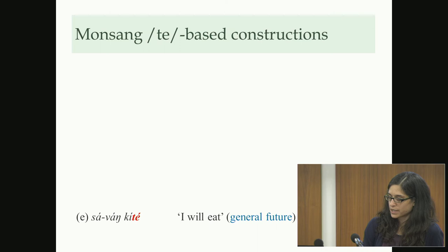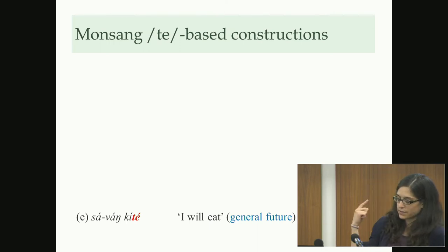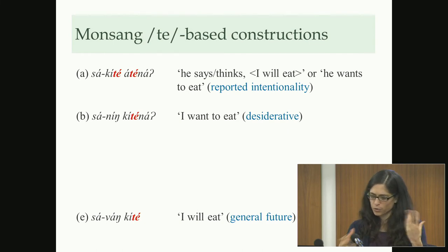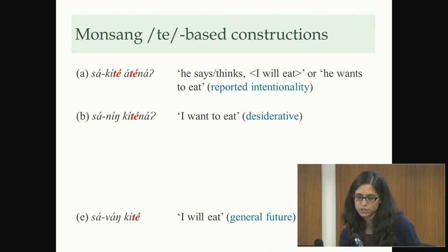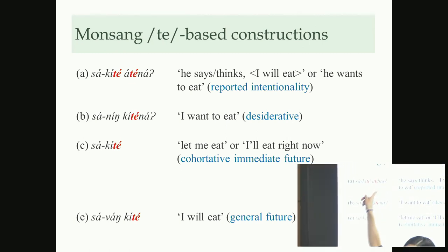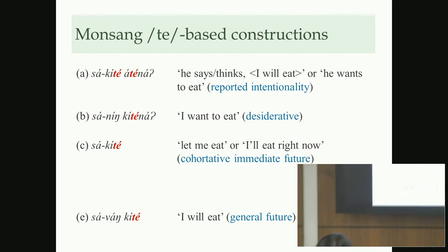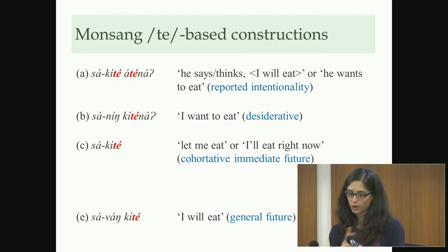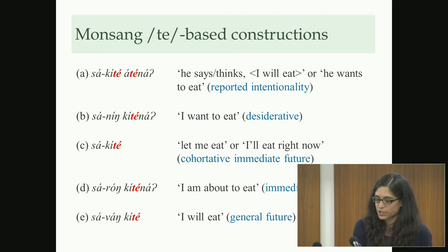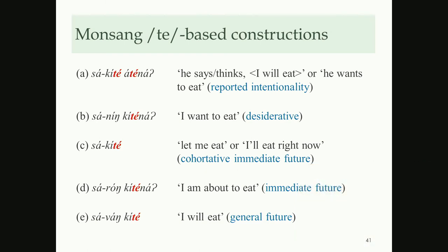Monsang has a proliferation of T-based constructions: 'savankite' means 'I will eat'; 'sakite at the night' is the more general ambiguous reported intentionality construction — 'he says/thinks I/he will eat'; the true desiderative 'saninkite na' means 'I want to eat'; 'sakite' itself is a cohortative or immediate future — 'let me eat' or 'I'll eat right now'; and 'sarongkite na' is an immediate future. They really made good use of this verb in different kinds of constructions.